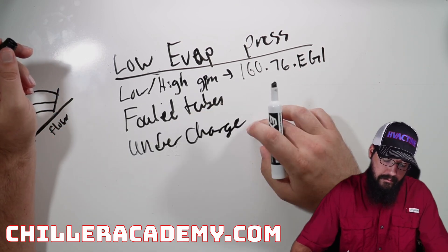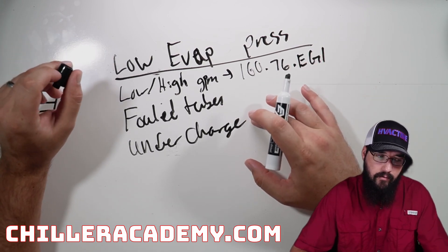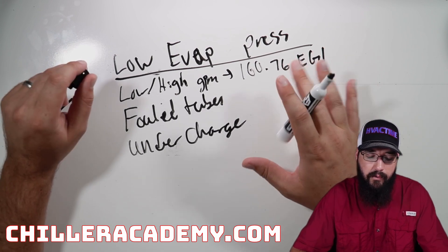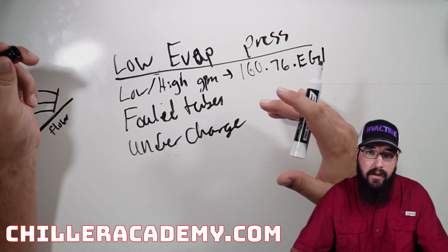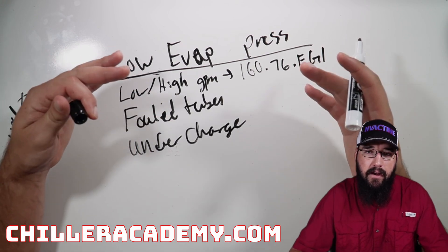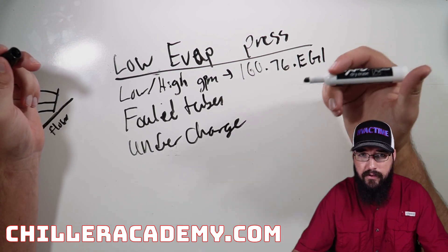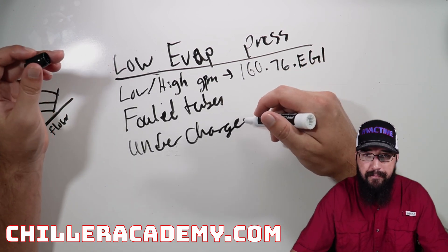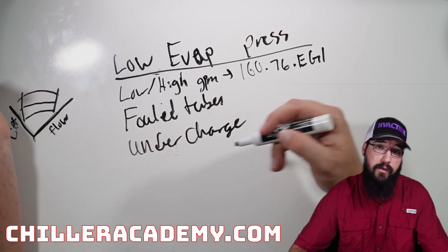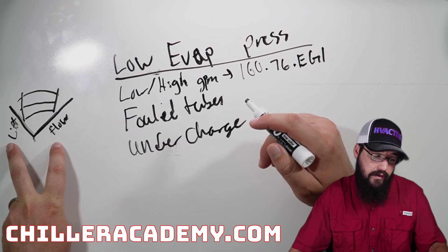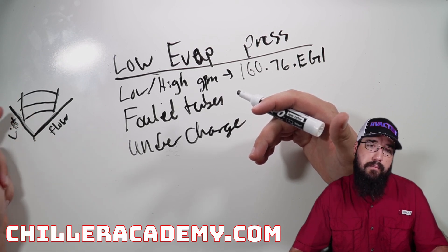Undercharge — going back to the metering device failure scenario — is going to starve our evaporator. Even if the metering device is working but we're maintaining condenser level correctly yet cannot get our level up in the evaporator, that's what undercharge starts to look like. You won't be able to maintain evaporator level, but you'll still have condenser level since that's what we control off of. If neither can satisfy, you've definitely got a big issue — that's a clear undercharge. Undercharge pushes your pressure down, creates a higher lift condition, and dramatically reduces volume, which plays heavily into where we are on the surge graph.